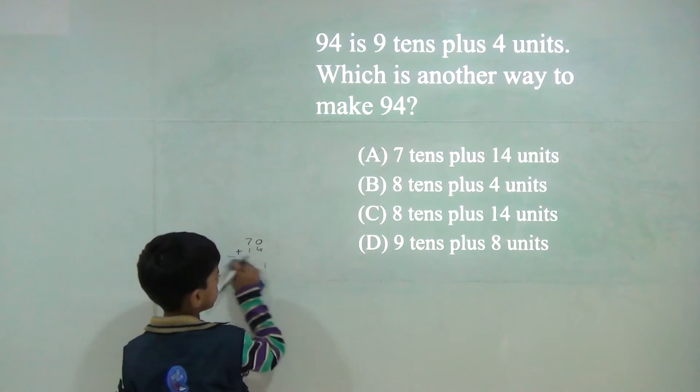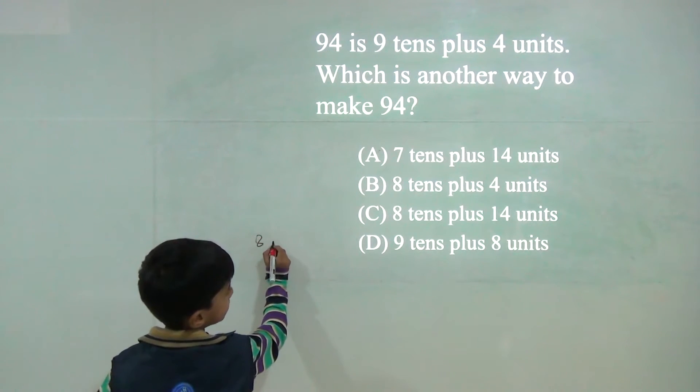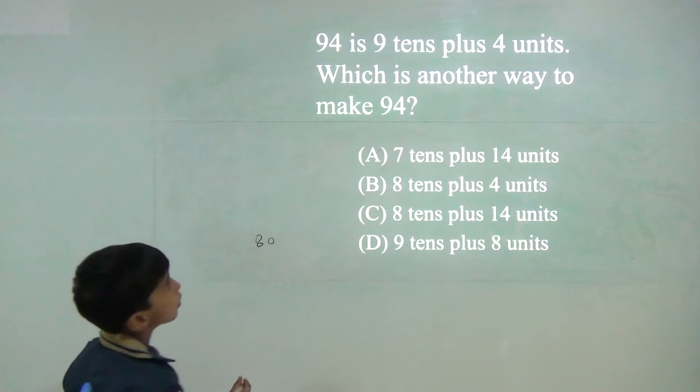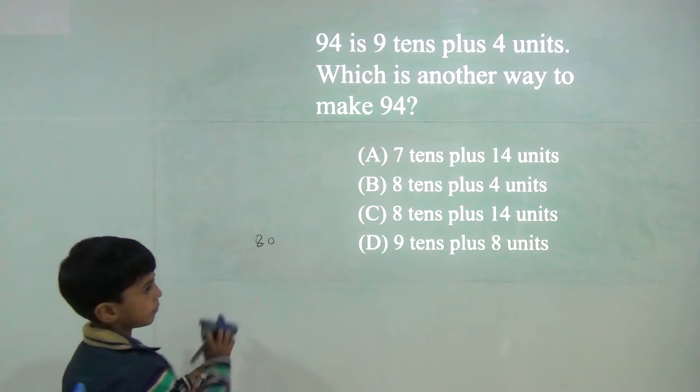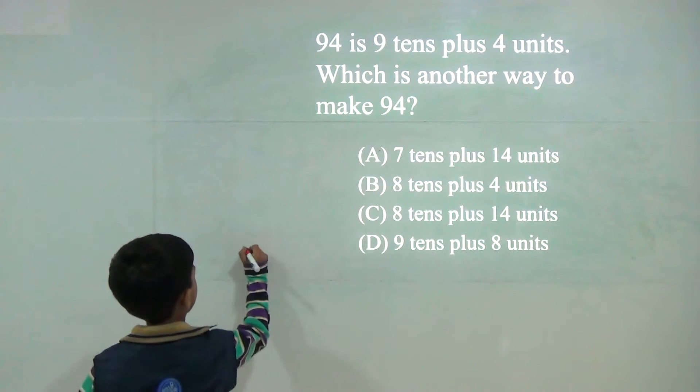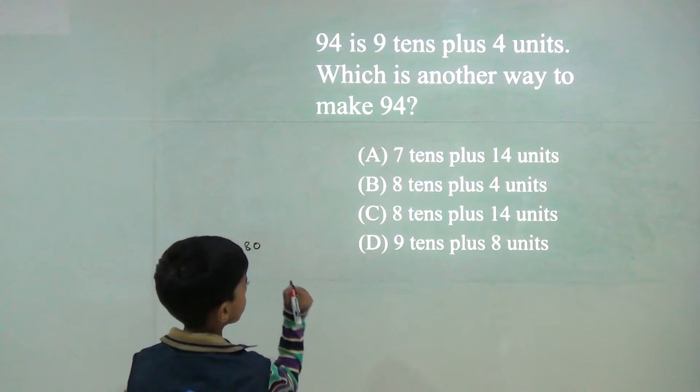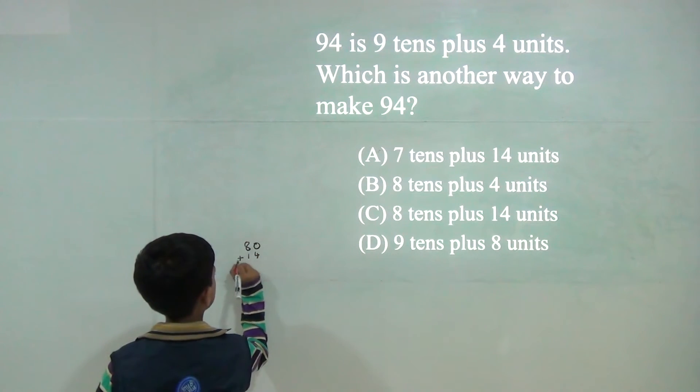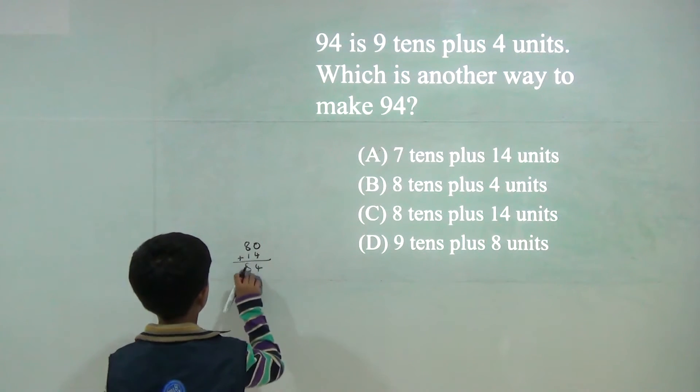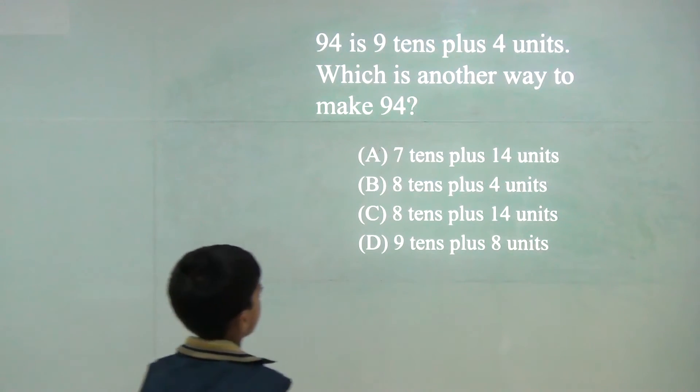So it can't make 8 tenths plus 4. It can't make 8 tenths plus 14 units. So 4 and 9, and 9. It can make. So answer would be C.